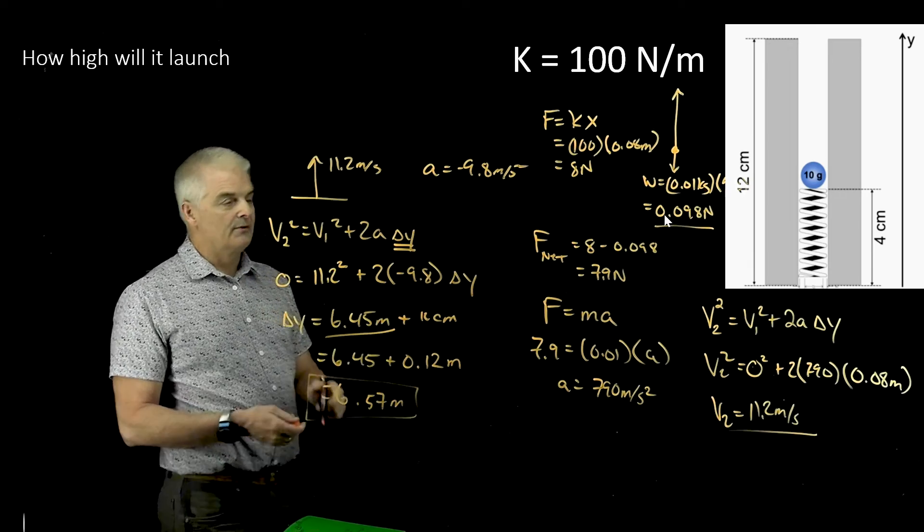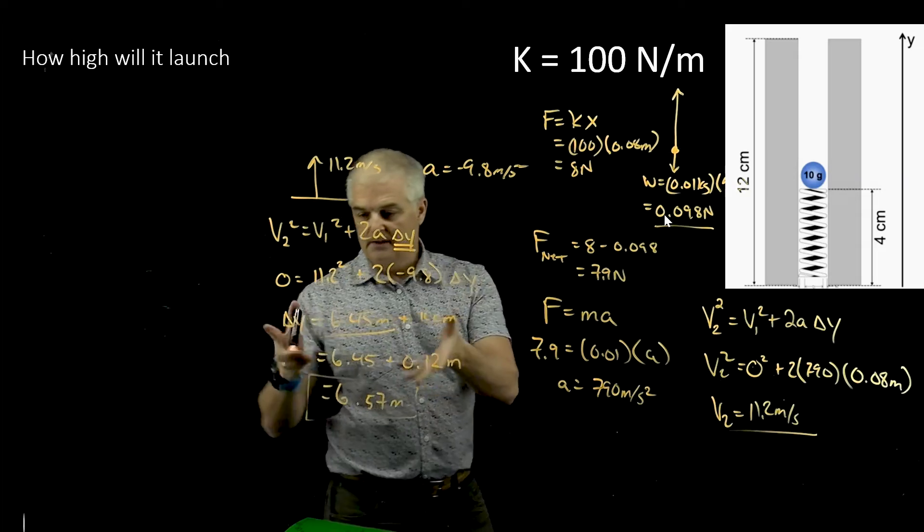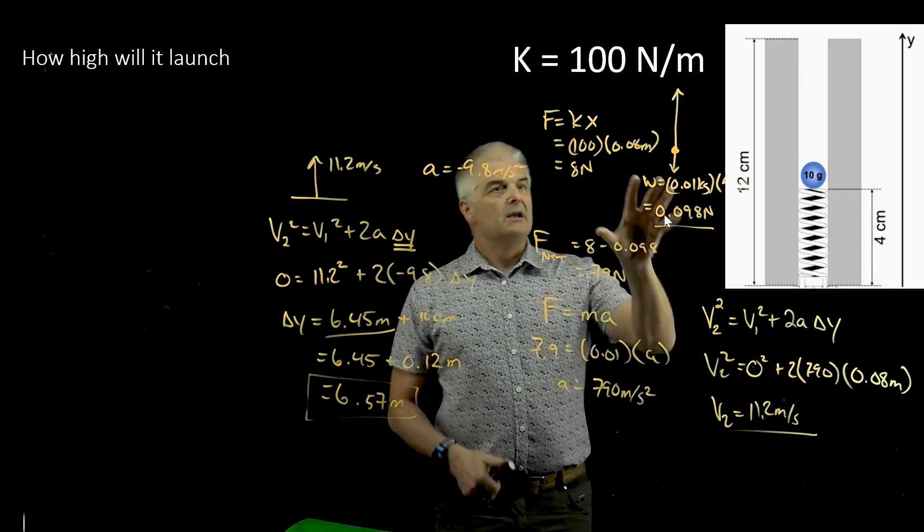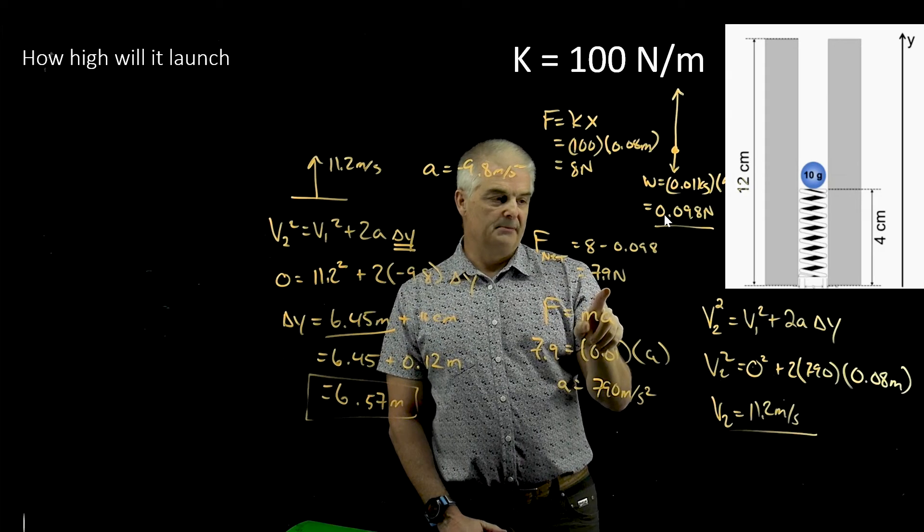And that's how you would solve a problem like that. But it's, again, this isn't hard. We've done kinematics equations before. You use the spring constant to find the force. Boom, 7.9 newtons.